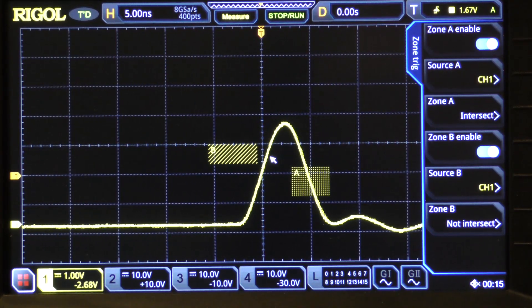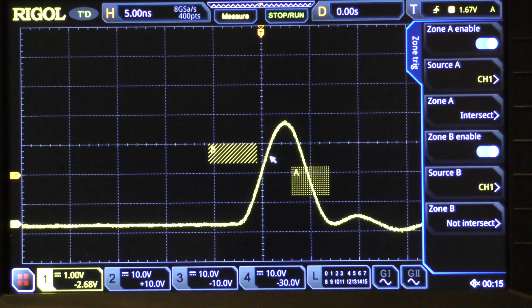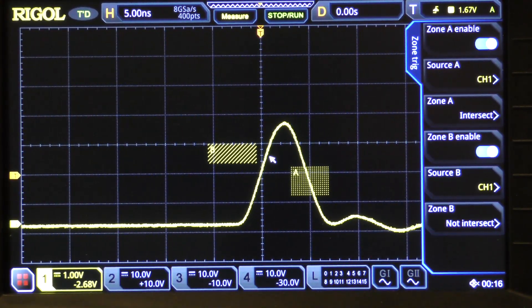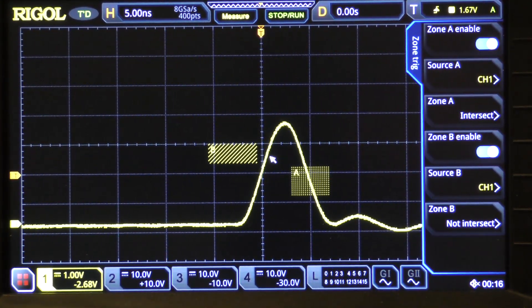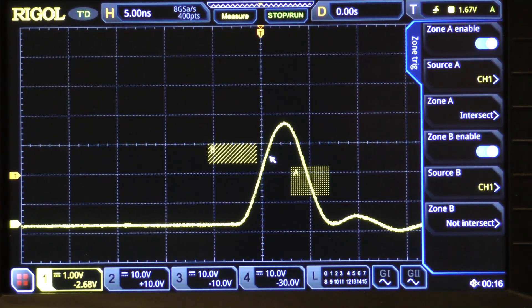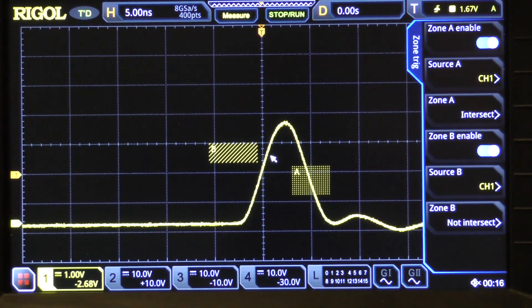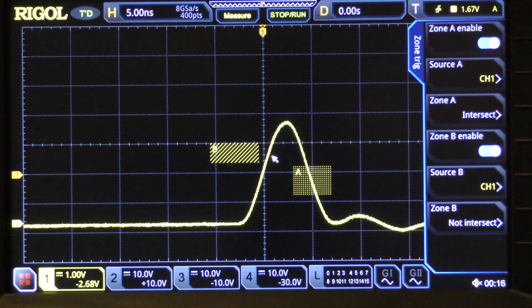Now let's take a look at a place where it might not work so well. Zone trigger works really well where you can either see the signal you want to draw the box around or you can guess where it is. Let me show you what I mean by guess.